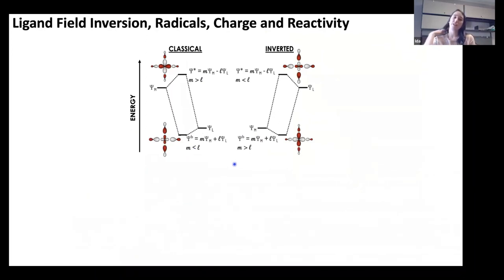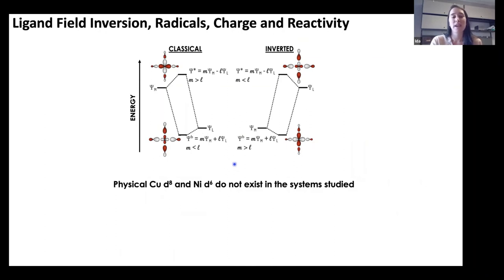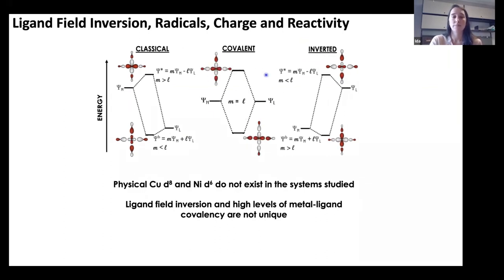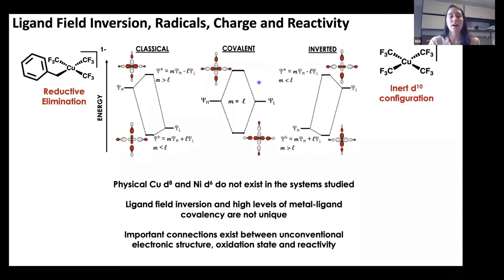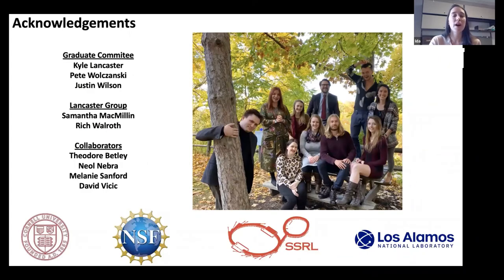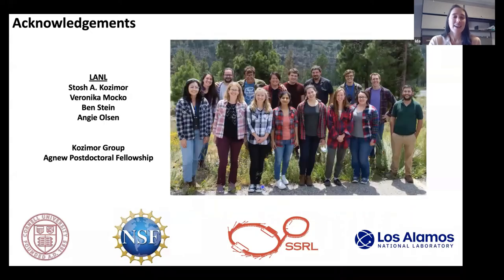In closing: physical copper D8 and nickel D6 do not seem to exist in the systems we've studied. Ligand field inversion or high levels of metal–ligand covalency doesn't seem to be unique to specific complexes, and it gives us a powerful way to think about oxidation state and reactivity. This idea of ligand field inversion explains why the copper tetrakis CF3 complex is inert, while the copper III benzyl and nickel IV phenyl complexes are competent for reductive elimination or nitrene transfer. I would like to thank my grad school group — Kyle for being a wonderful mentor, Sam for the beamline trips — and my group at LANL, especially Stash Casimiro, for getting me started on x-ray spectroscopy of f-elements.